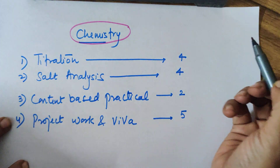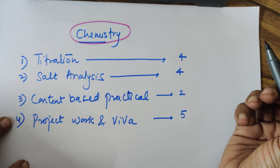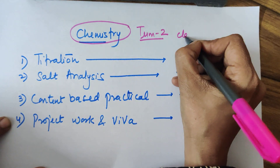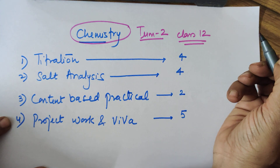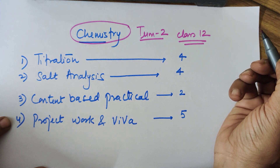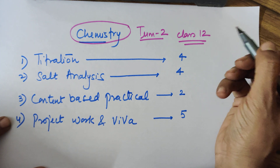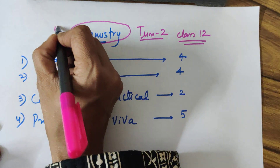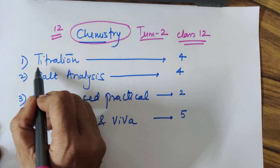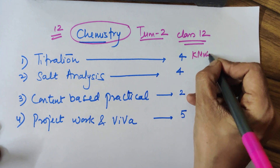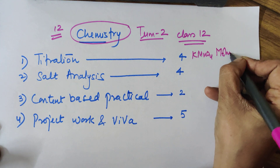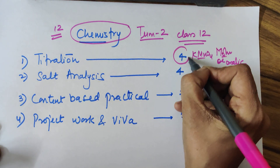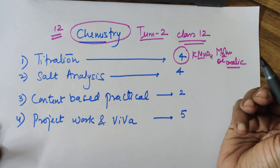A quick recap of what exactly happens in your chemistry practicals — since I am a chemistry person, I can give you a detailed view. For Class 10th, there is no chemistry practical in Term 2, so Class 10th can relax as far as chemistry is concerned. For Class 12th chemistry, you have titration — which is KMnO₄ versus Mohr's salt, or it could be with oxalic acid. Both titrations are in your syllabus and anyone can be asked.